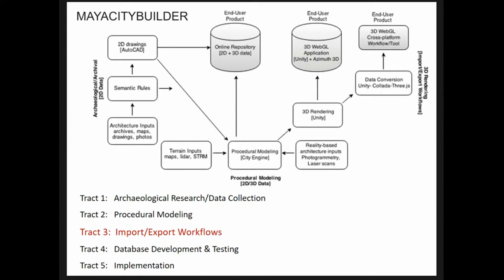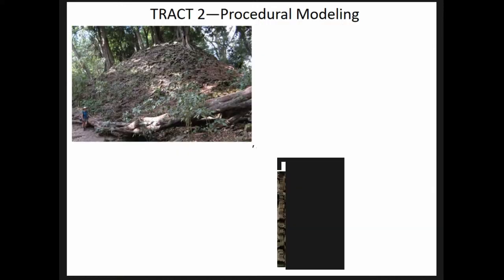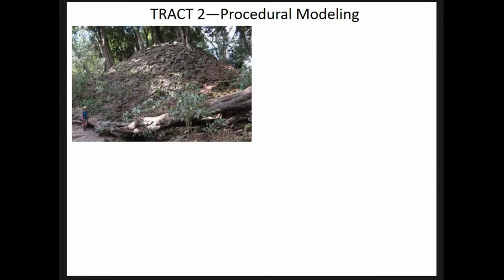The Maya City Builder project research design has five tracks. Today we're going to focus mostly on track three, which is the import/export portion. The case study we've been working on to narrow our data analysis is the UNESCO World Heritage site of Copan, which is in Honduras, located at the southeast periphery of the Maya world.